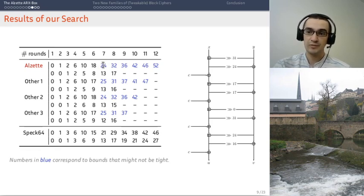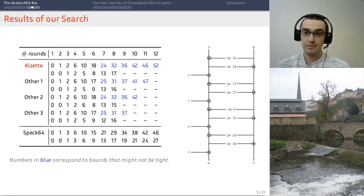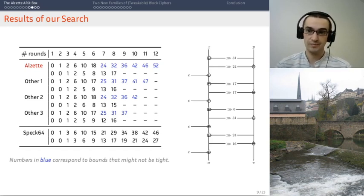When the numbers are in blue, like this 24 here, it means that we have a bound. So, we know that the probability cannot be higher than 2 to the minus 24. But actually, maybe the highest possible is 2 to the minus 25. We are not sure. But we are certain that it's at most 2 to the minus 24.